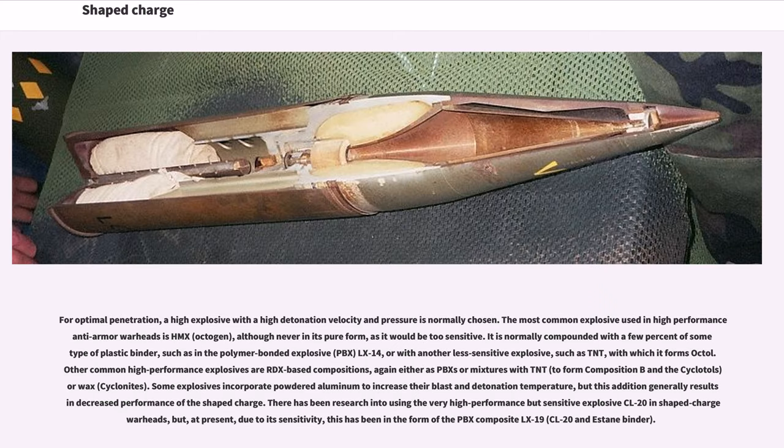For optimal penetration, a high explosive with a high detonation velocity and pressure is normally chosen. The most common explosive used in high-performance anti-armor warheads is HMX, octogen, although never in its pure form, as it would be too sensitive. It is normally compounded with a few percent of some type of plastic binder, such as in the polymer-bonded explosive, PBX, LX-14, or with another less sensitive explosive such as TNT, with which it forms Octol. Other common high-performance explosives are RDX-based compositions, again either as PBXs or mixtures with TNT to form Composition B and the cyclotols or wax, cyclonites. Some explosives incorporate powdered aluminum to increase their blast and detonation temperature, but this addition generally results in decreased performance of the shaped charge. There has been research into using the very high-performance but sensitive explosive CL-20 in shaped charge warheads, but at present, due to its sensitivity, this has been in the form of the PBX composite LX-19, CL-20 and an Estane binder.